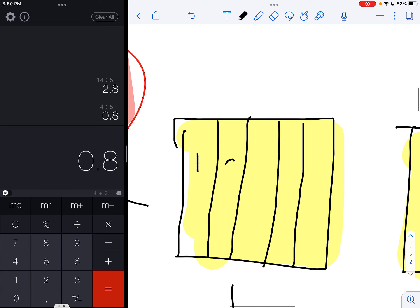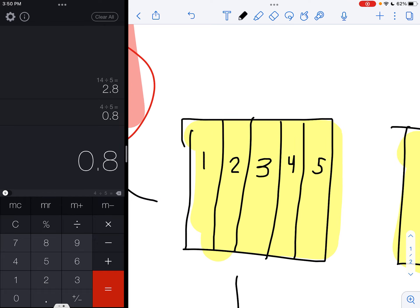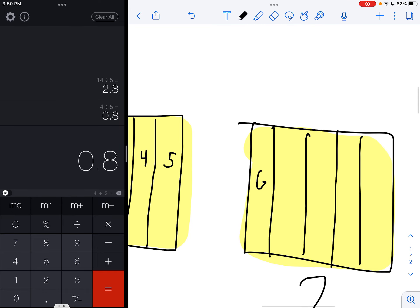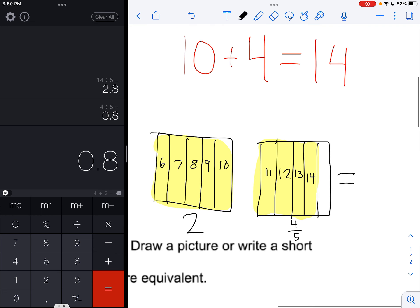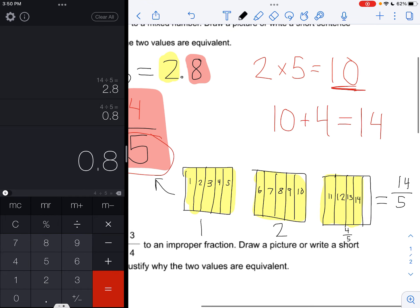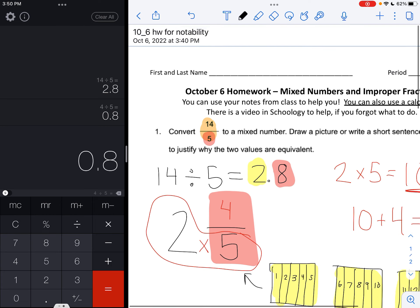But then if we want to count out how many fifths we have in total, we have 1, 2, 3, 4, 5, 6, 7, 8, 9, 10, 11, 12, 13, and 14. So we have 14 fifths, which is exactly the number that we started with.